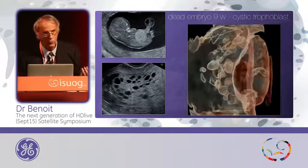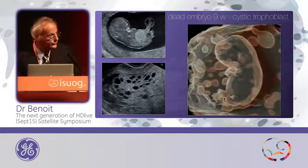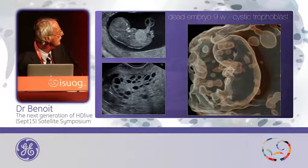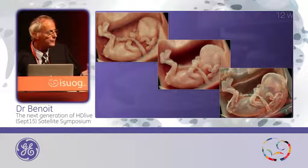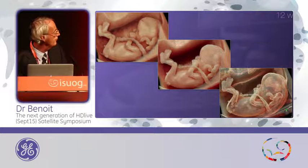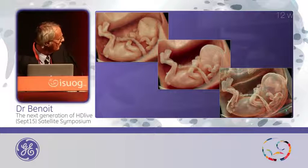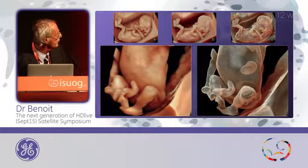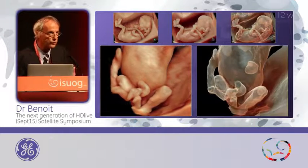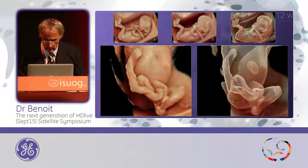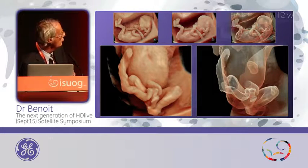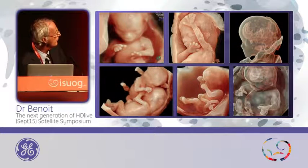Can we use it later, at 12 weeks of pregnancy? Yes. Here you can see HDLive with different levels of silhouette — at maximum and around 50%. With maximum silhouette, you can see inside the brain and also the stomach and the bladder. This is another one at 12 weeks of pregnancy — we just changed the transparency and the silhouette, and inside the abdomen you can see the stomach. Here are some examples of a normal fetus with different levels of silhouette.